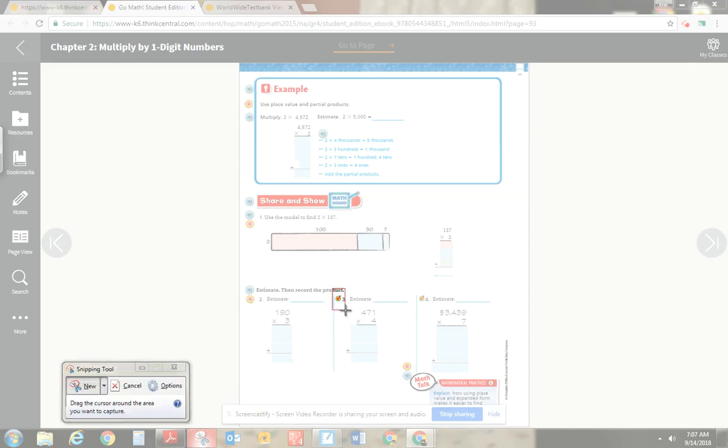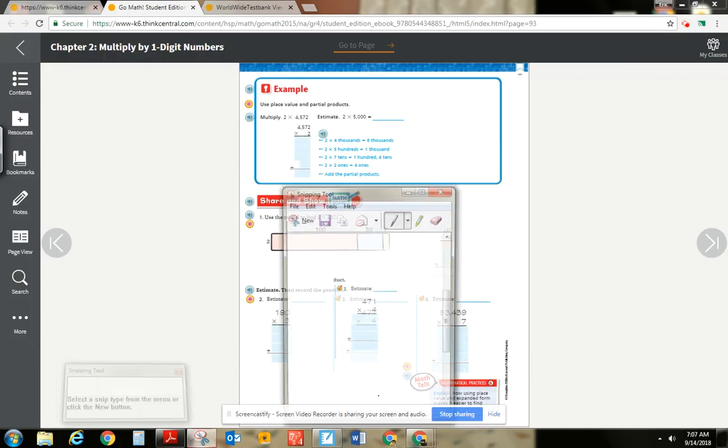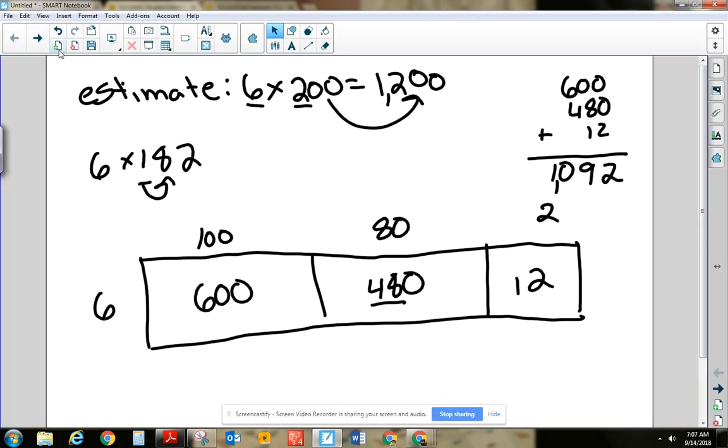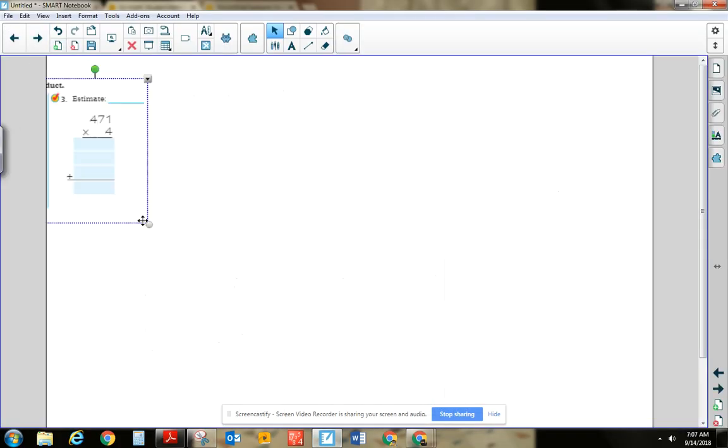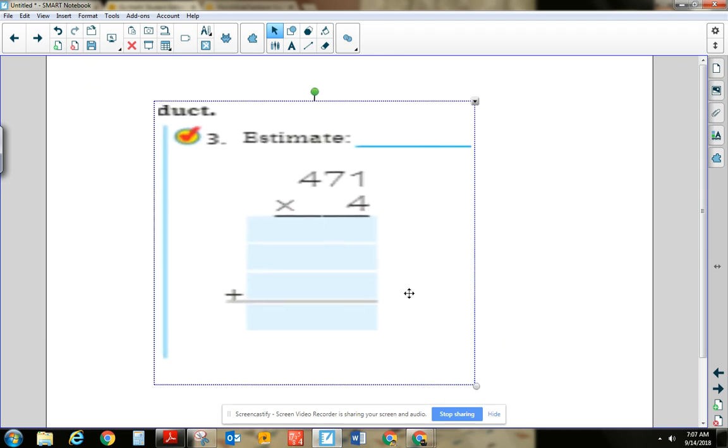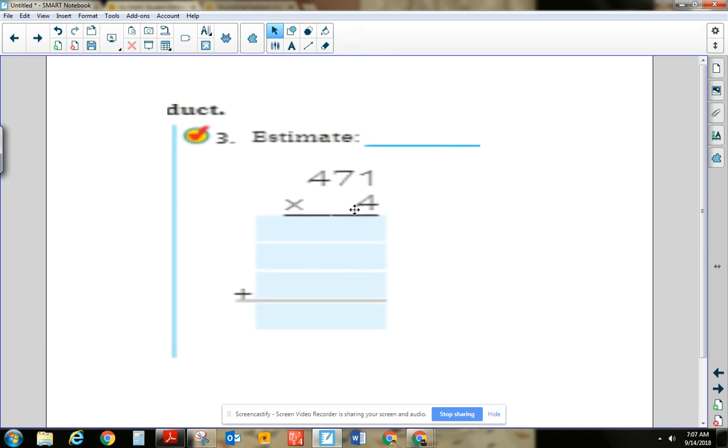Let's take a look at number 3 here. So it says 471 times 4. Let me just snip this over. And here in this problem, you'll notice that there's a little bit of a blurring. Sorry, it's a little blurry. So right away, it says to estimate.